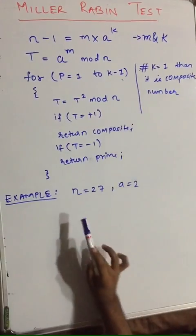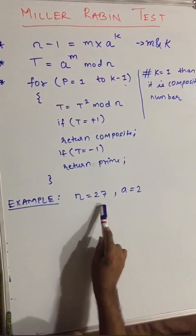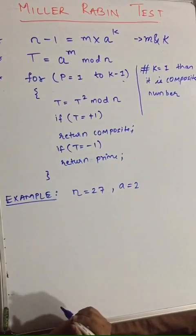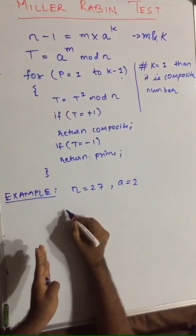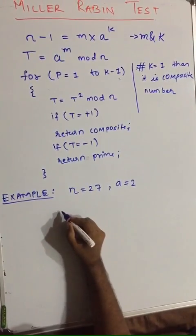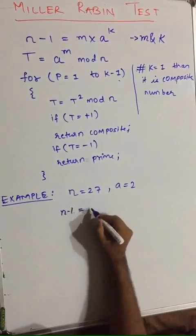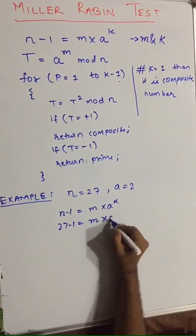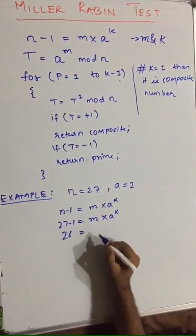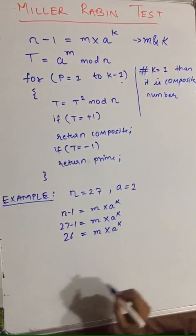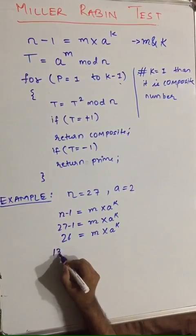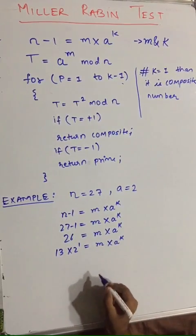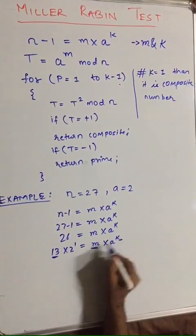Now let us solve the first example: n is equal to 27 and a is equal to 2. Following step one, n minus 1 is equal to m into 2 raised to k. So 27 minus 1 equals 26. We write 26 as 13 into 2 raised to 1. So we can directly relate that m will be 13 and k will be 1.